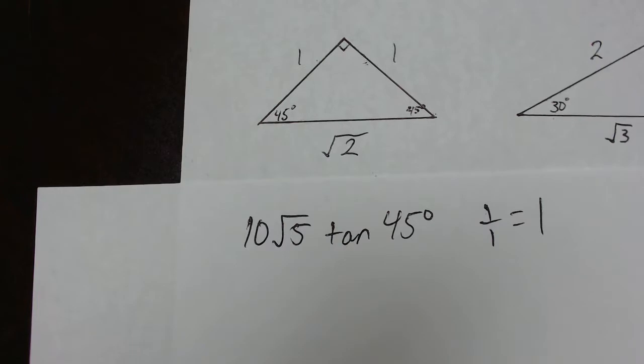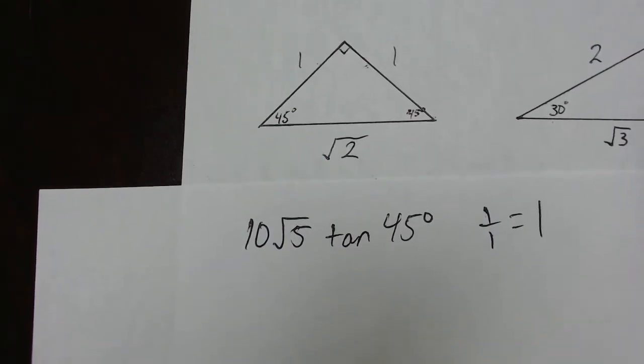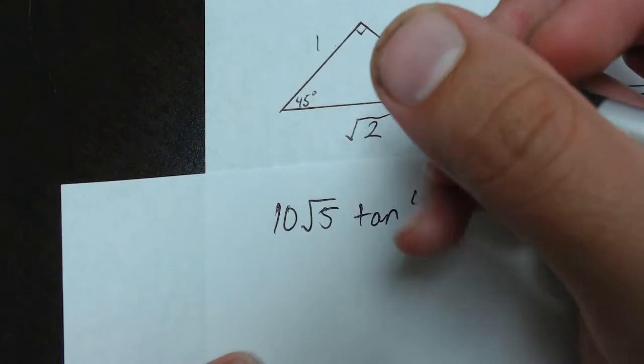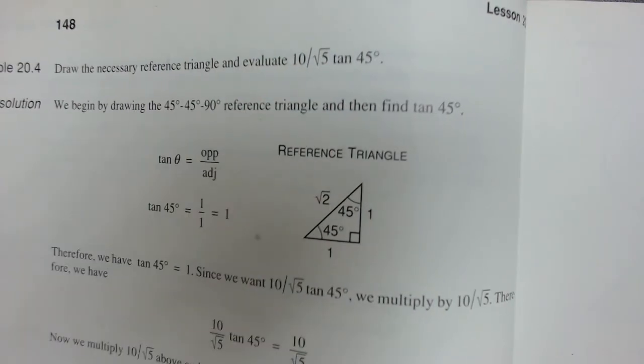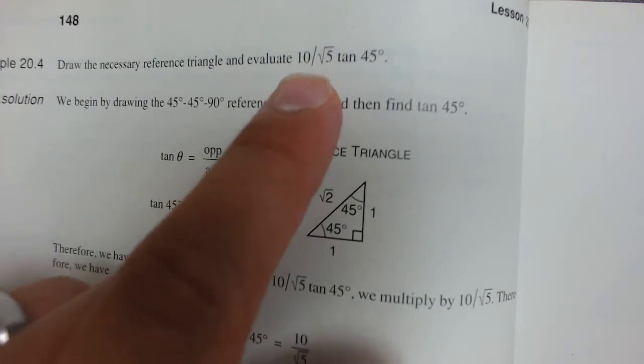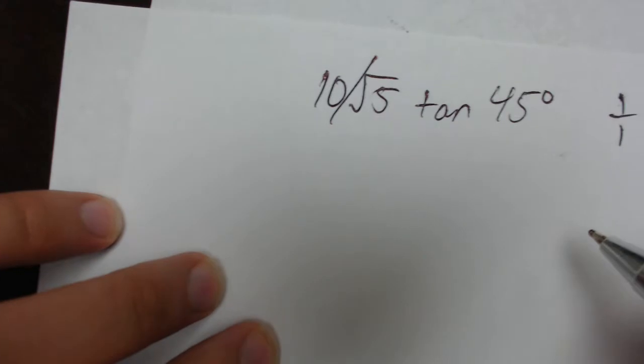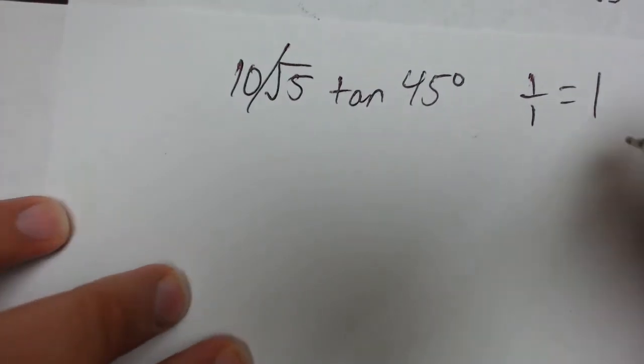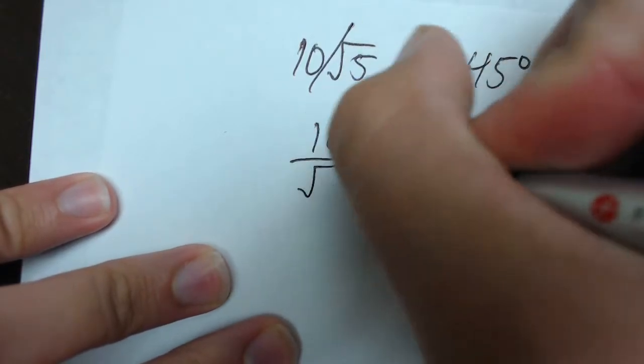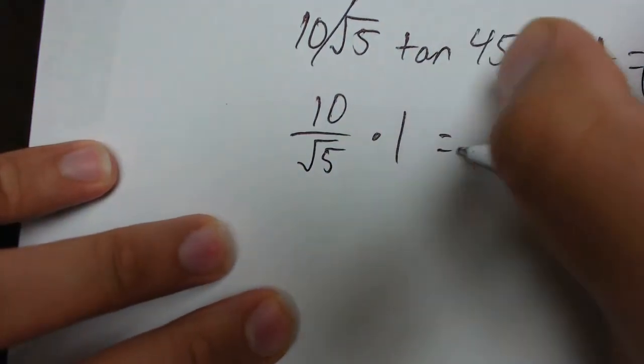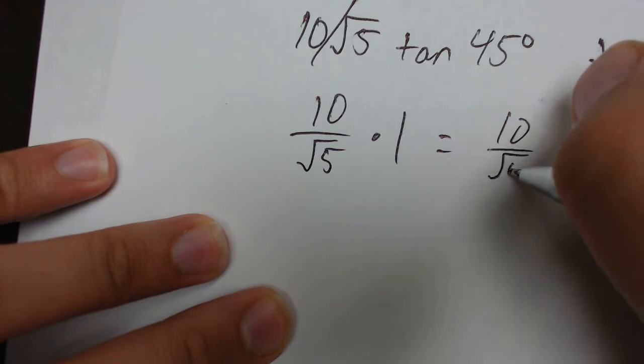I just realized I misread the problem. They wrote it as 10 divided by square root 5. I read it quickly and did not see the divided by symbol. So watch out for this on your homework. So it's actually 10 divided by root 5 times the tangent of 45, which is equal to 1. So I actually have 10 over root 5 times 1. That's just going to equal 10 over root 5.